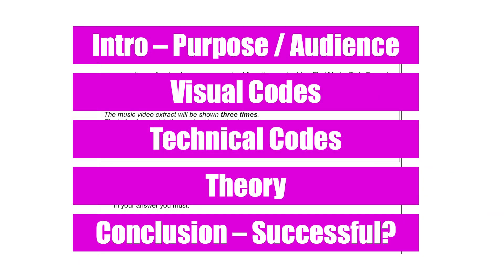So how do you lay out your answer? Again, no right or wrong way really — this is just one suggestion. You could do a very short intro — one sentence — such as 'the purpose of the music video is to promote the band to the target audience of Foo Fighters and rock music fans.' Then move on to visual codes first, then technical codes, then theory, then a conclusion. But you can mix these up — visual codes, technical codes and theory — as long as you've analyzed the media text using visual codes, technical codes and theory.